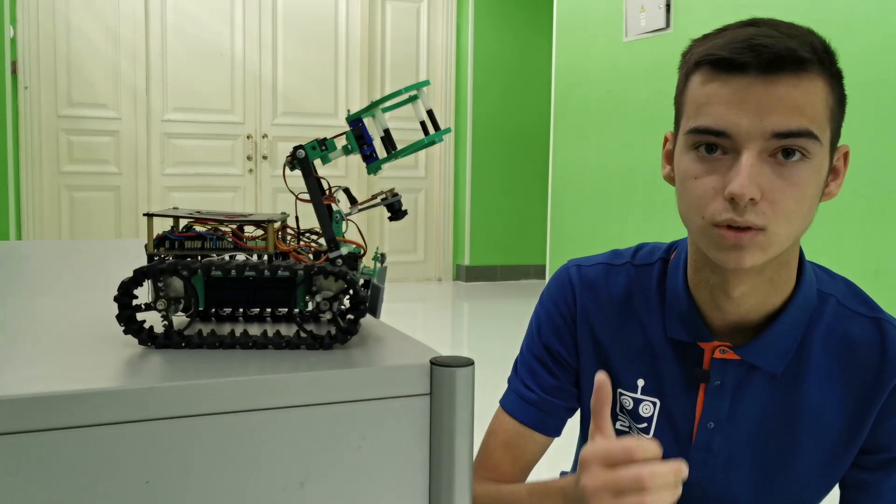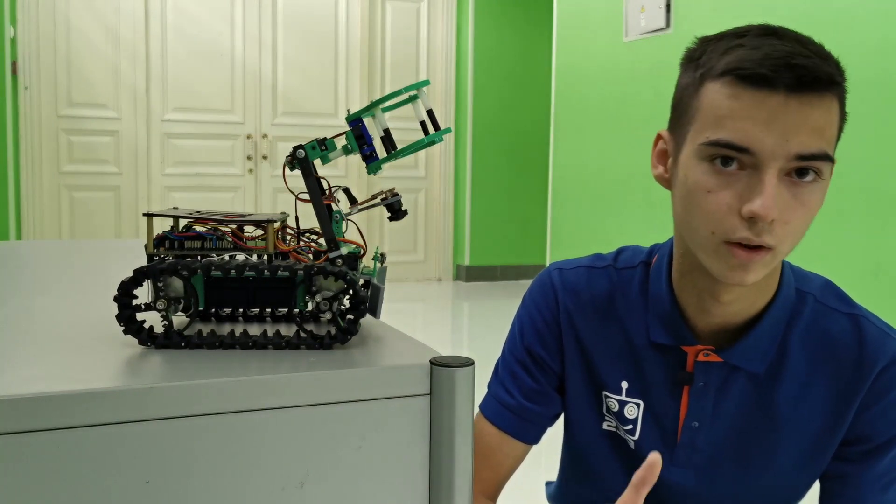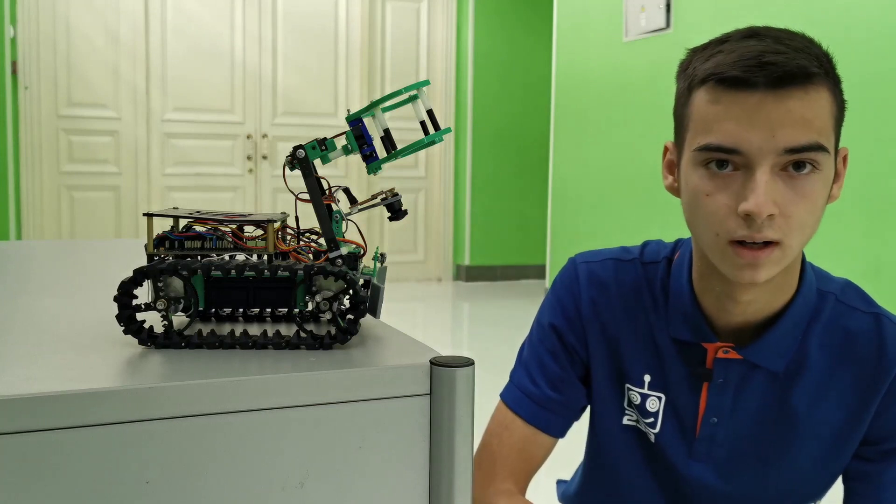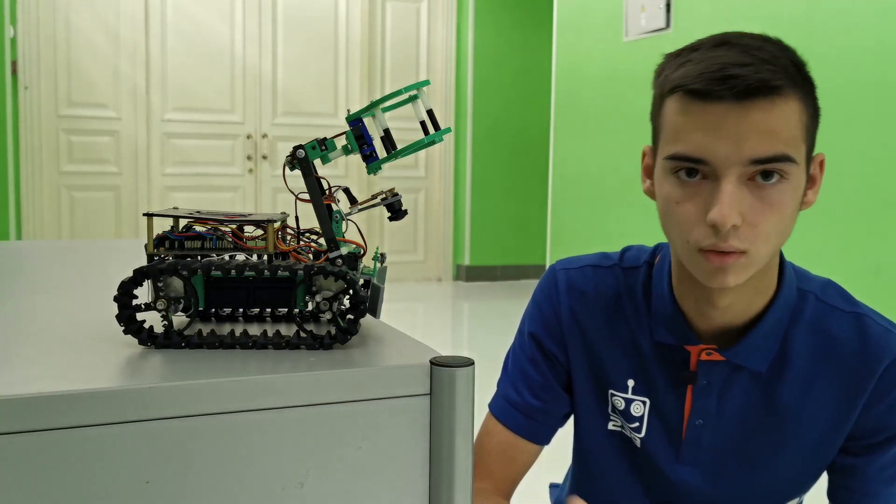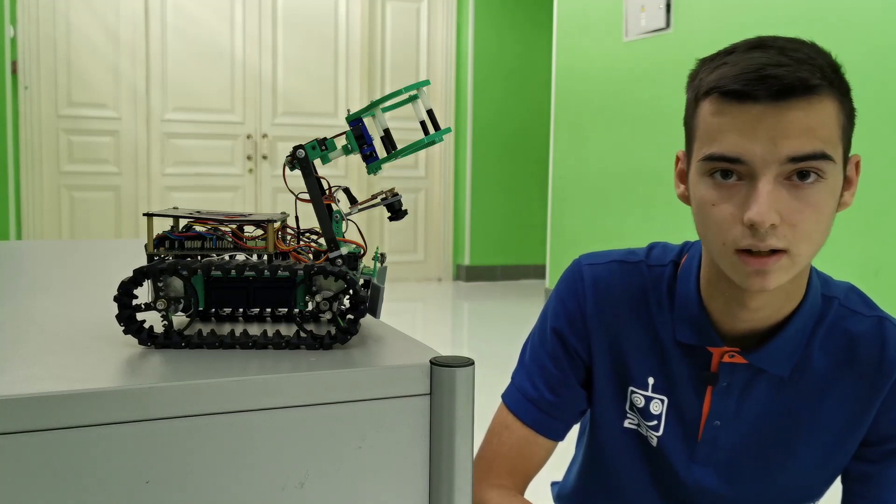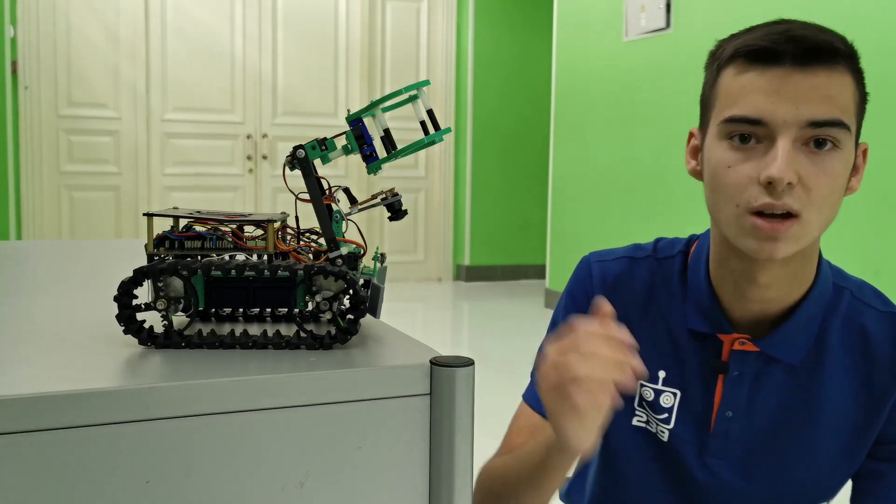During our past participation in RoboCup, we created a robot, one of the main devices of which was an OpenMV programmable camera. It was a unique feature of our robot, because it had been following a line, detecting green marks and finding victims, thanks to that camera.